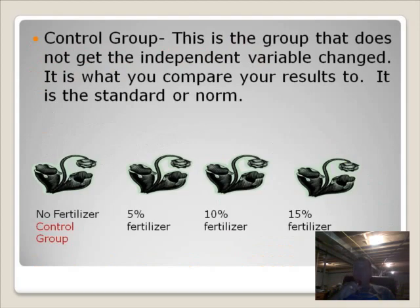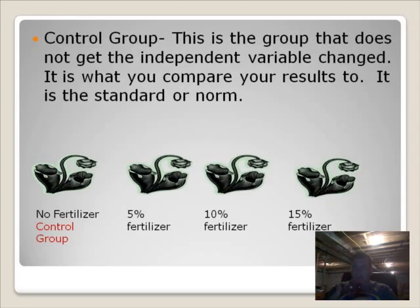The control group is the one that students tend to have the most problem identifying with. This is the group that does not get the independent variable changed. What that means is it's the group that you can compare your results to. It's like the standard or the norm. Nothing is done to this group so that you have some kind of a comparison group.